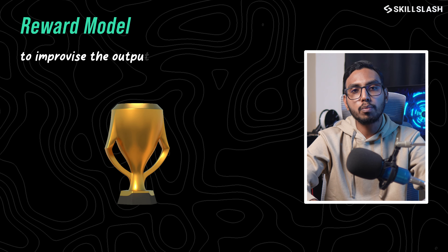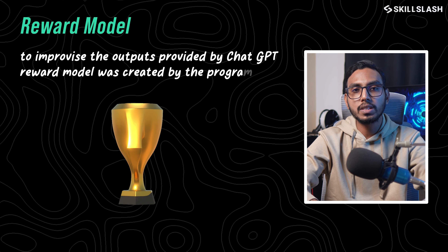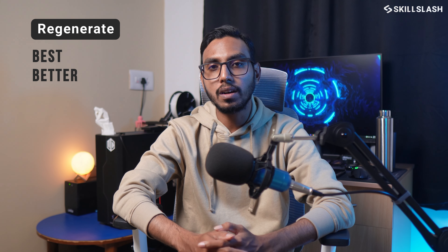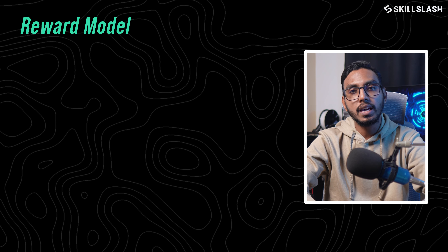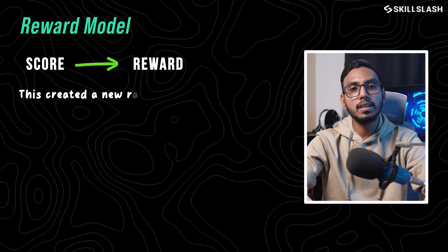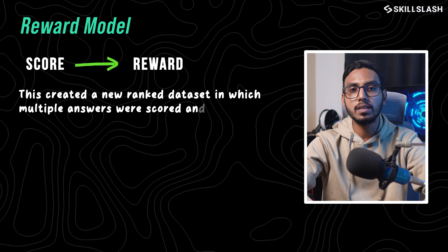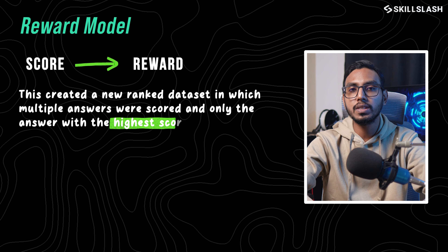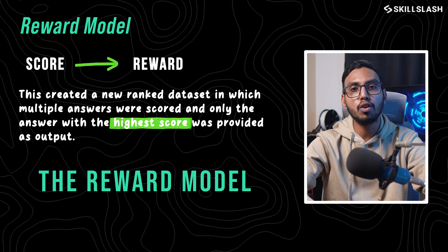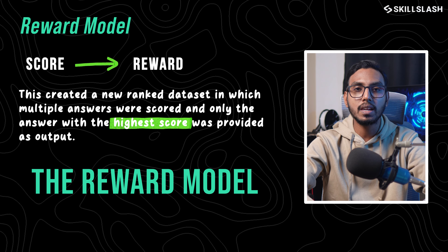Next comes the Reward model. In order to improve the output provided by ChatGPT, a reward model was created by the programmers. You might have observed that you get multiple responses every time you hit regenerate. These multiple answers were ranked individually — best, better, or worst — and each answer was given a score called a reward. This created a new ranked dataset in which multiple answers were scored, and only the answer with the highest score was provided as output. This newly trained model was called the Reward model, which helped in providing improved outputs.